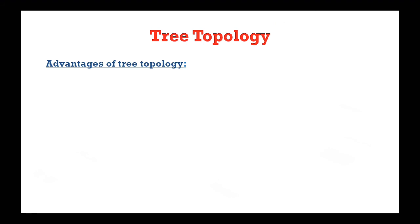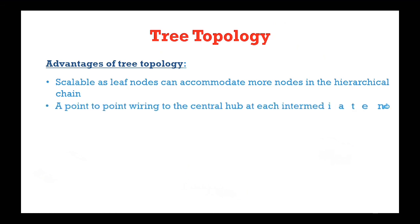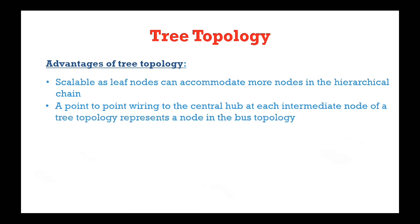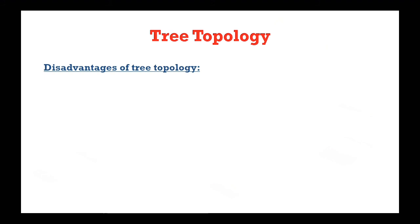Now let's have a look at the advantages of tree topology. Cables of leaf nodes can accommodate more nodes in the hierarchical chain. There is point-to-point wiring to a central hub at each intermediate node. Other hierarchical networks are not affected if one of them gets damaged, and maintenance and fault finding are easier.